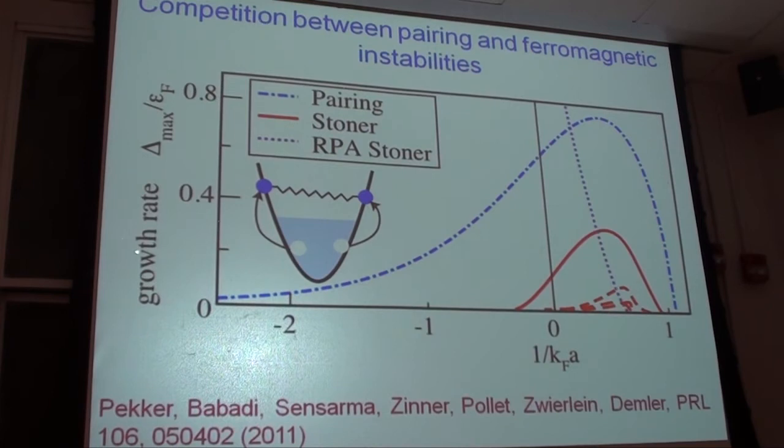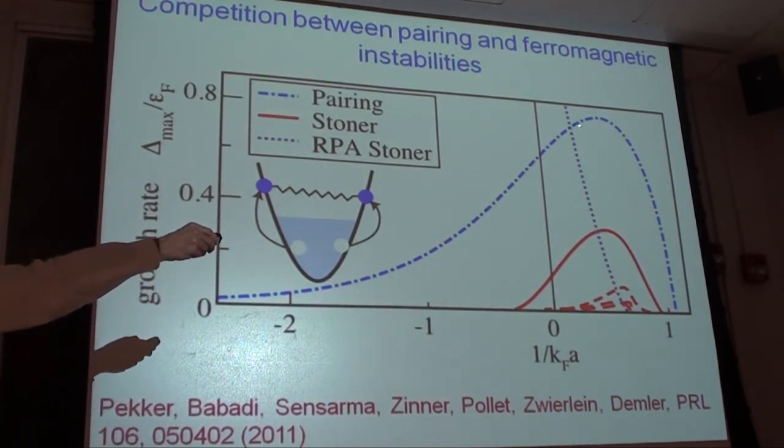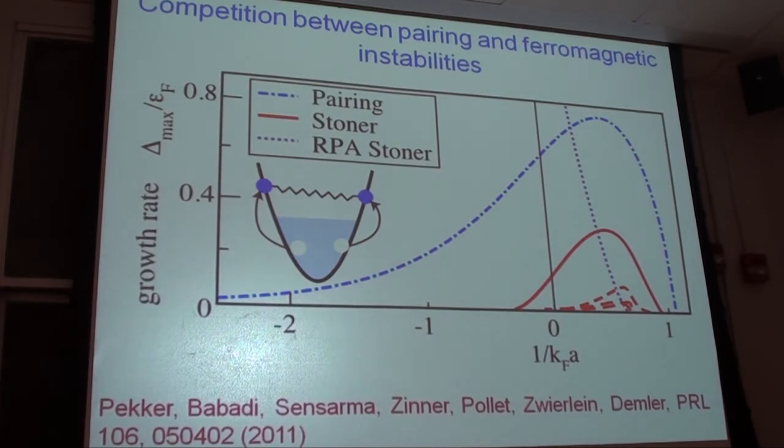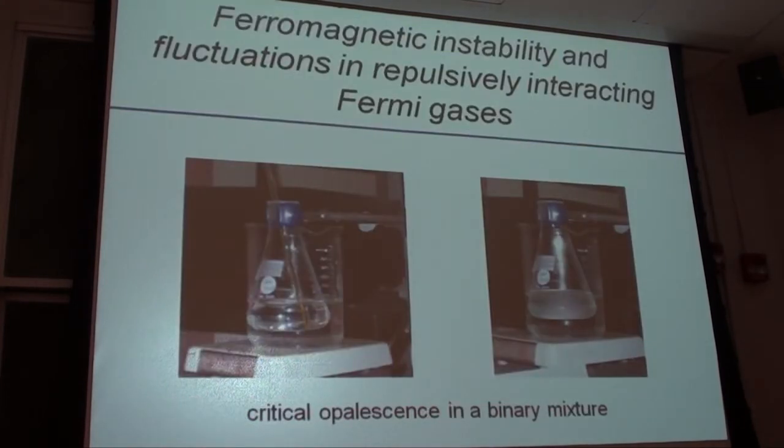This question of a possible instability to pairing was raised by theorists. They compared the growth rate of the Stoner instability, which is the instability to form ferromagnetic domains with the instability to form pairs. And what they indicated is that both of those instabilities are similar in the order of magnitude of the growth rate, but they declared pairing is the winner. In other words, the gas will always pair before it forms ferromagnetic domains.